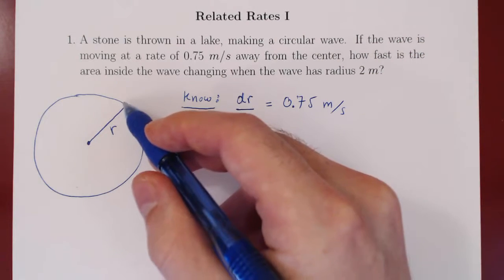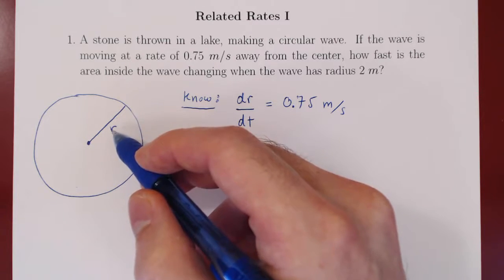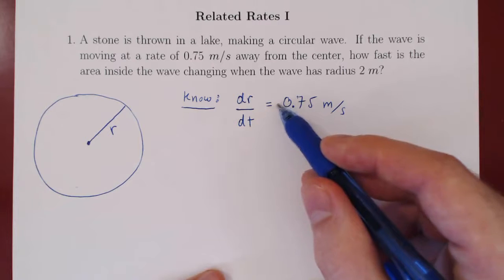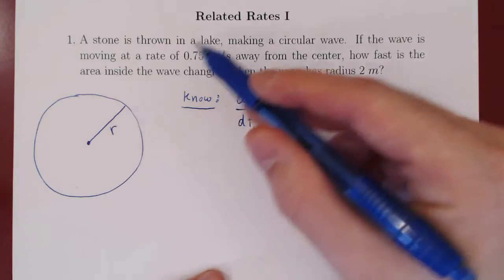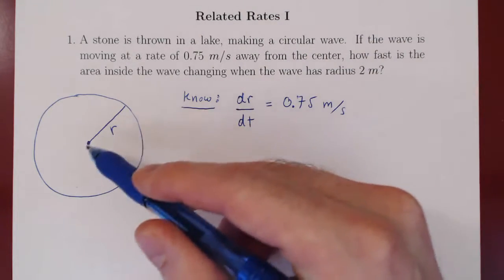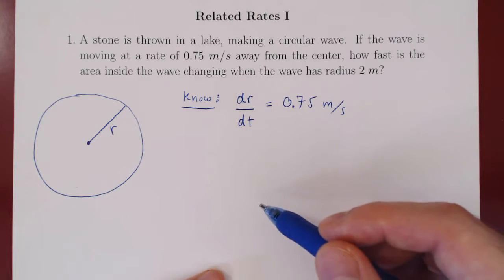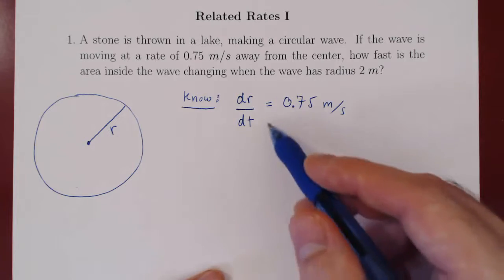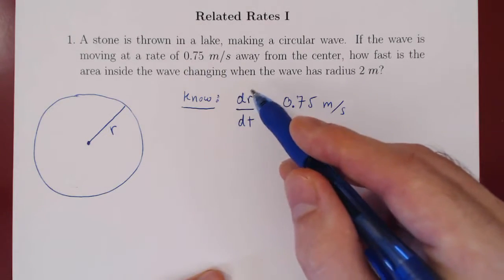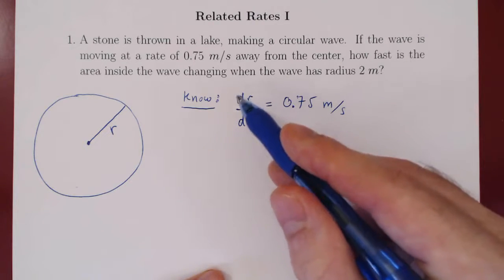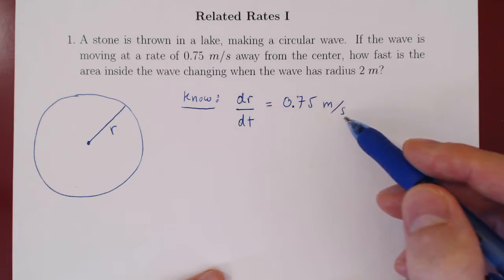If over time the radius was decreasing, then r as a function of t would be decreasing and we would have a negative rate of change. But because the wave keeps getting bigger and bigger, the radius is increasing, so it has a positive rate of change. The change in the length of the radius over the change in time is 0.75 meters per second.